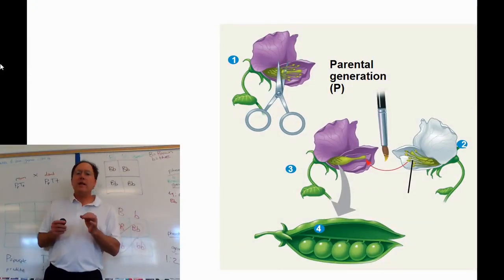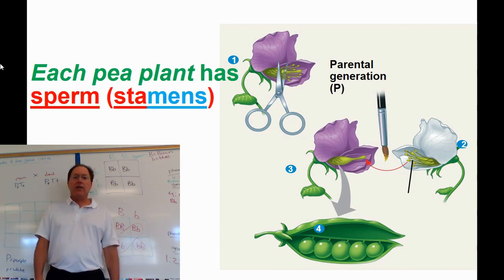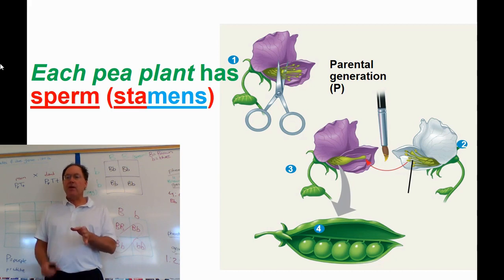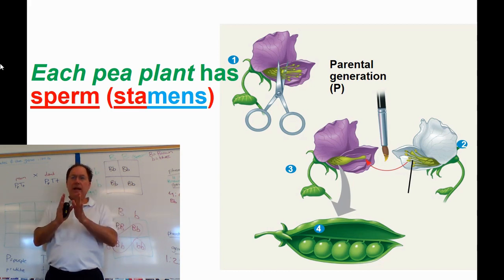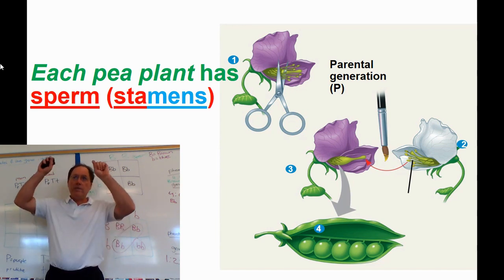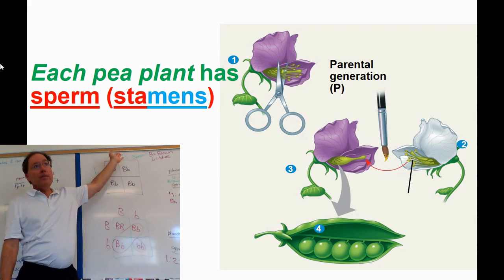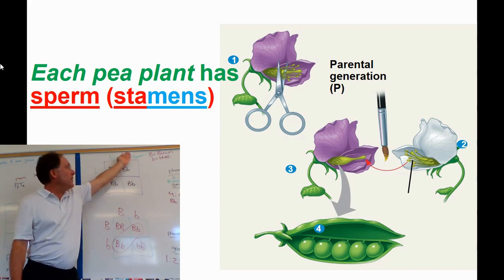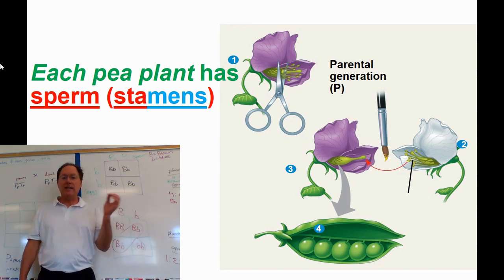First we need to go over pea plant floral anatomy. In each pea plant there is sperm on the stamens. Stamens are the male reproductive structures of flowers, comprised of an anther and a filament. The anther is where meiosis takes place — that's where the genes that are going to be in each sperm are made. Maybe a sperm will have the big B or maybe the little b.